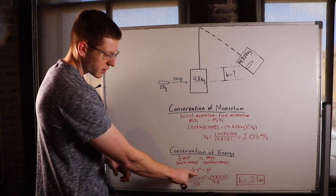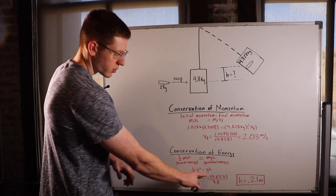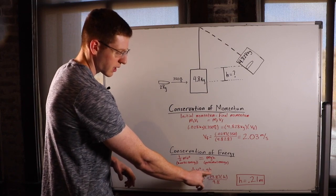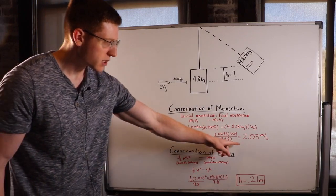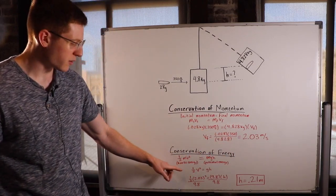So I'll simply set one half times the velocity squared equals gravity acceleration times the height. And now you see here why I needed this velocity, so that's why I solved for that.